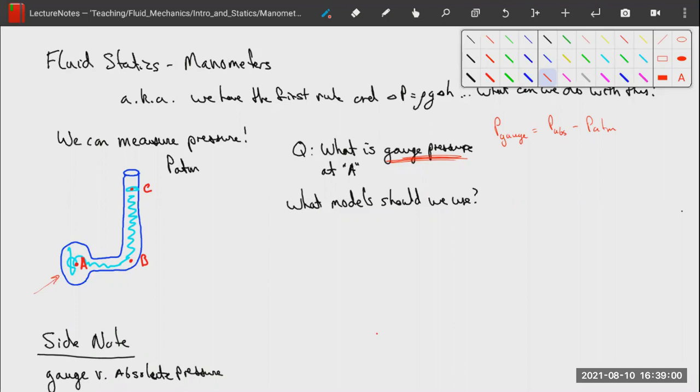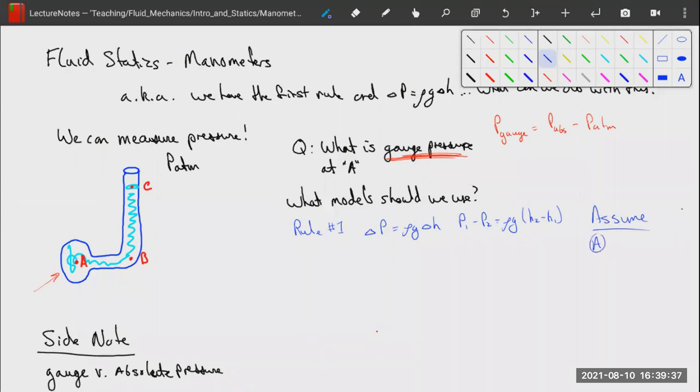So if we want to measure this, we need to know what models we should use. We have rule number one, and we have the hydrostatic equation, which is delta P equals rho G delta H. Or another way to put it, it is P1 minus P2 equals rho G H2 minus H1. And what assumptions do we need? As always, a fluid at rest is constant and B density is constant.